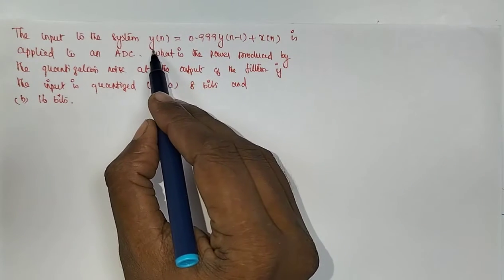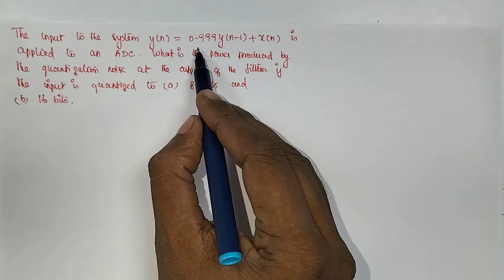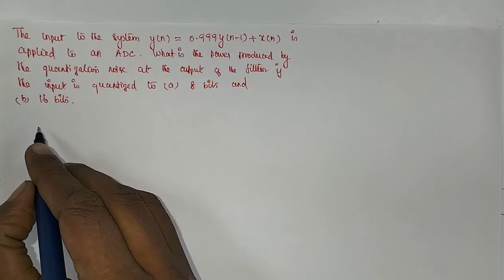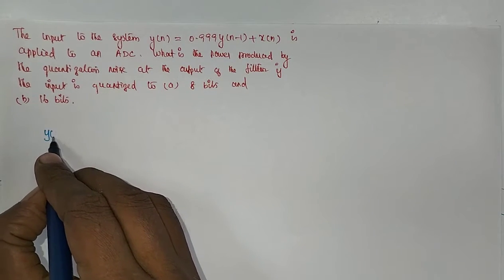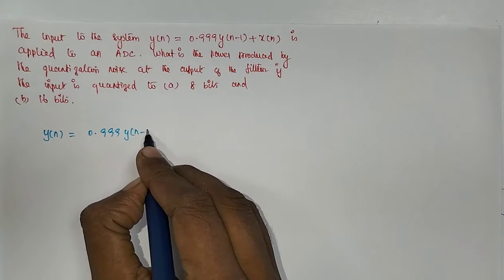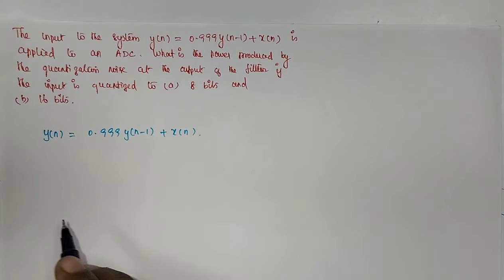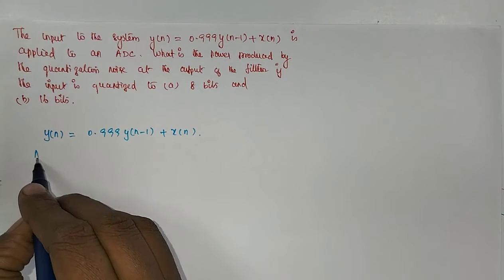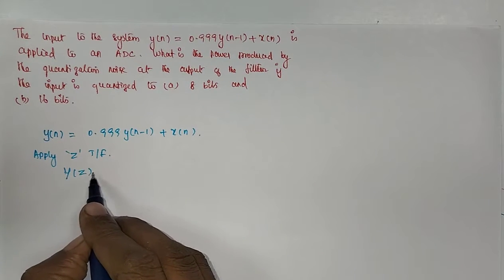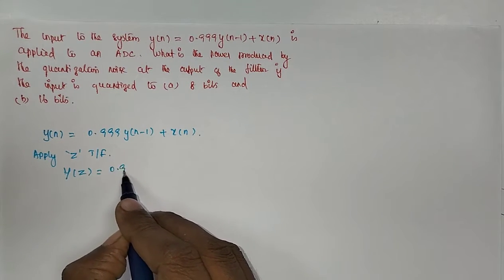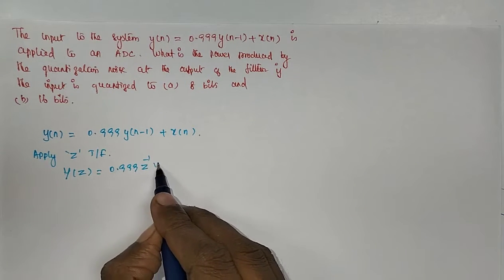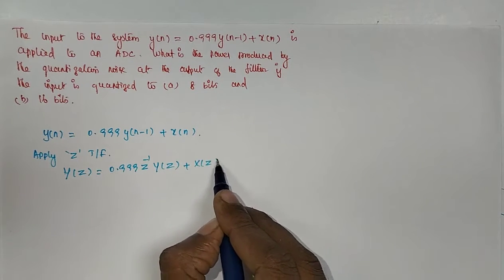The given response of the system is y[n] = 0.999·y[n−1] + x[n]. We apply the Z-transform so that Y(z) = 0.999·z⁻¹·Y(z) + X(z).